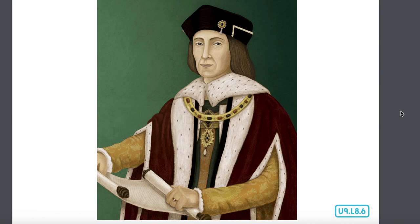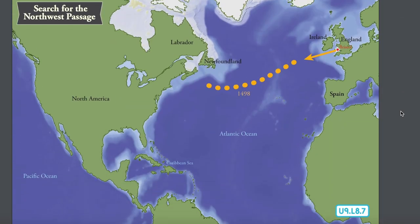Cabot returned to England and went to visit King Henry VII, certain that he had explored the northeast coast of Asia. He reported to the king that he discovered wonderful land in a place with a good climate. He mentioned the superb fishing grounds of which England could make great use. This discovery made King Henry VII very happy because at the time of Cabot's voyage, fish was a very expensive commodity. Seeing that his discoveries were welcomed, Cabot decided to return to the land he explored and sail until he reached another land in Asia full of spices and riches — the land that today is called Japan.